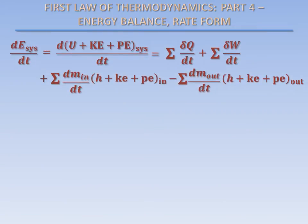You may have noticed that there are different symbols used for the time derivatives. Some of these derivatives use the letter d to represent a differential amount. These are called exact differentials. Differential amounts of heat and work are denoted by the delta symbol. These are called inexact differentials.